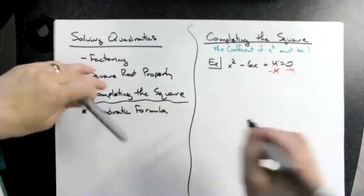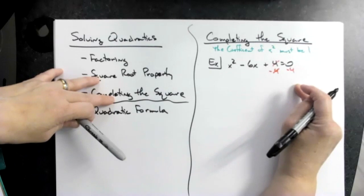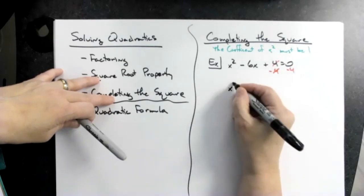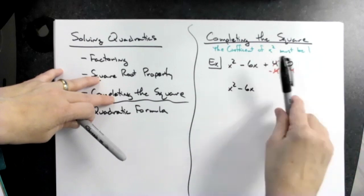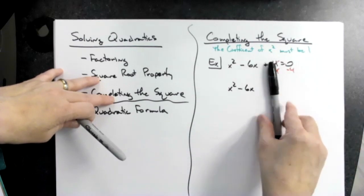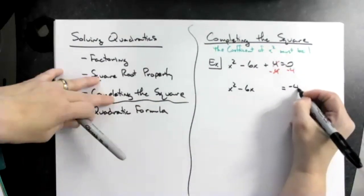Okay, so then I'm going to have, and I'm going to line things up really nice here, I'm going to have an x squared minus 6x. All right, I'm not going to put anything underneath here for a reason. I'm going to bring the equal sign straight down and then I'm going to put the negative 4 here.